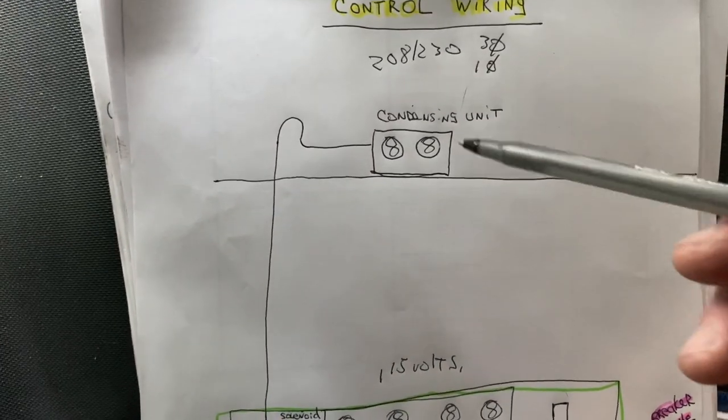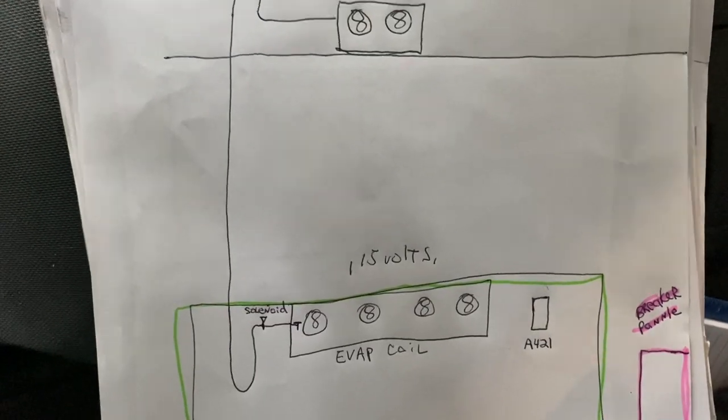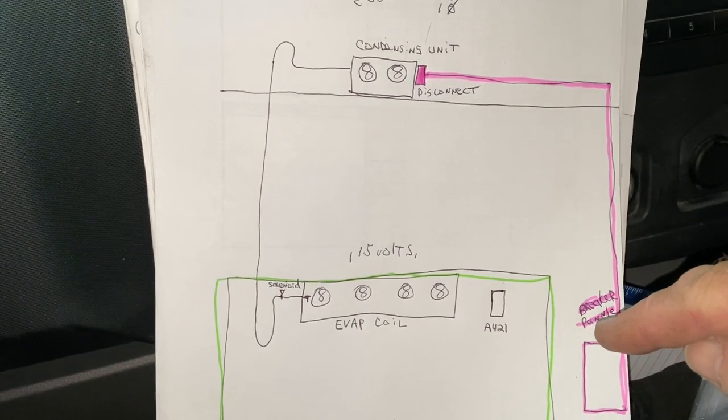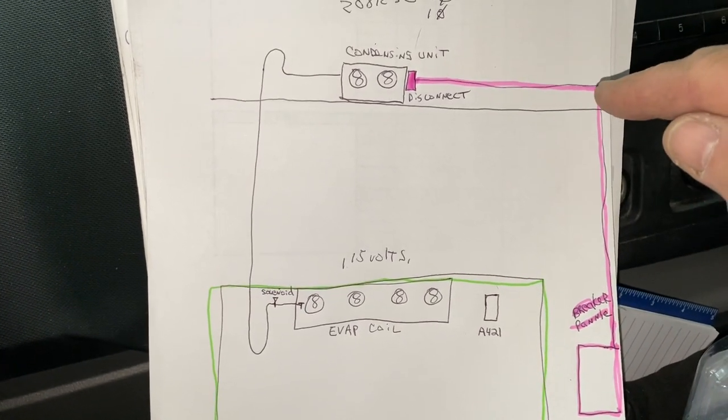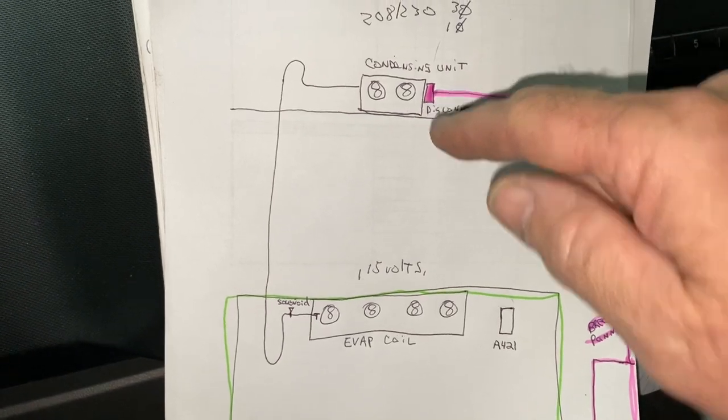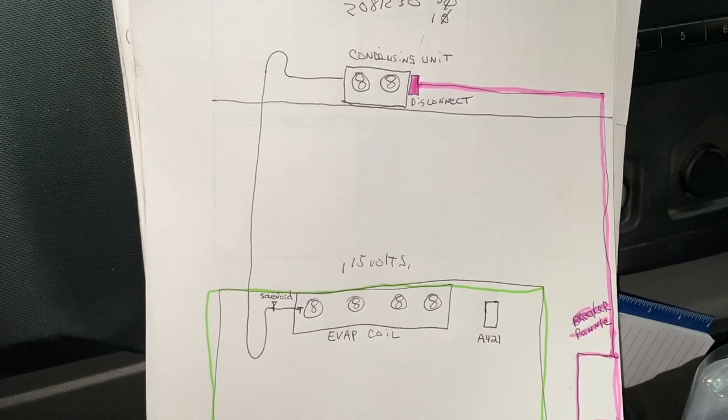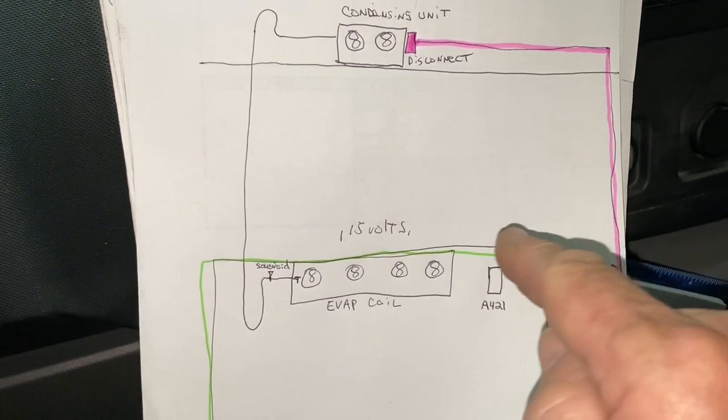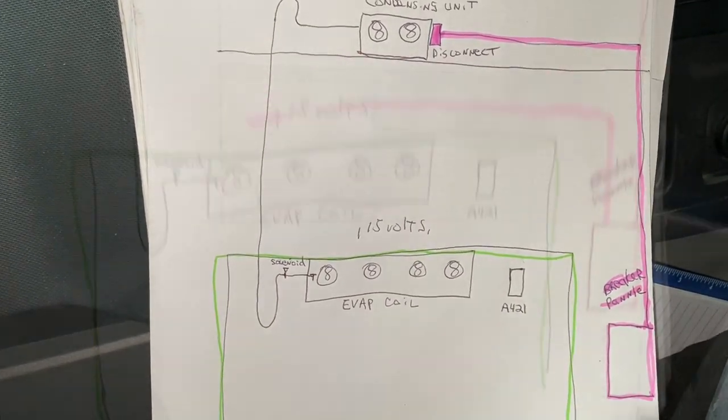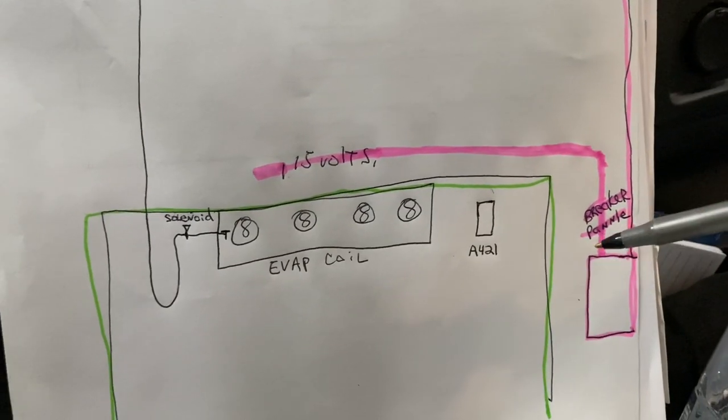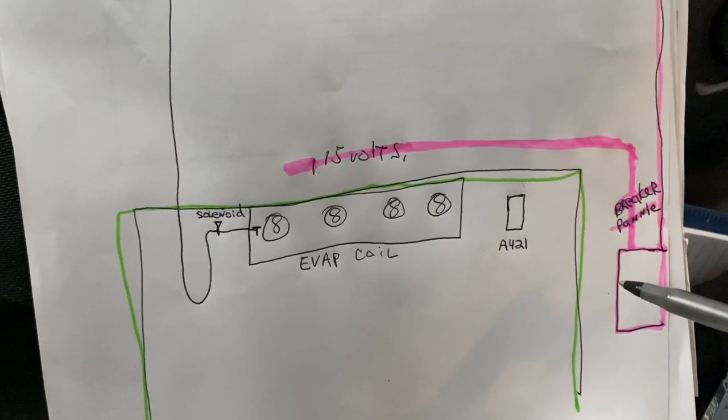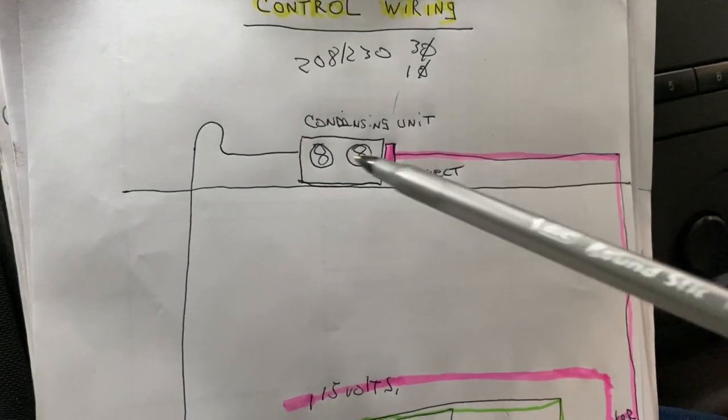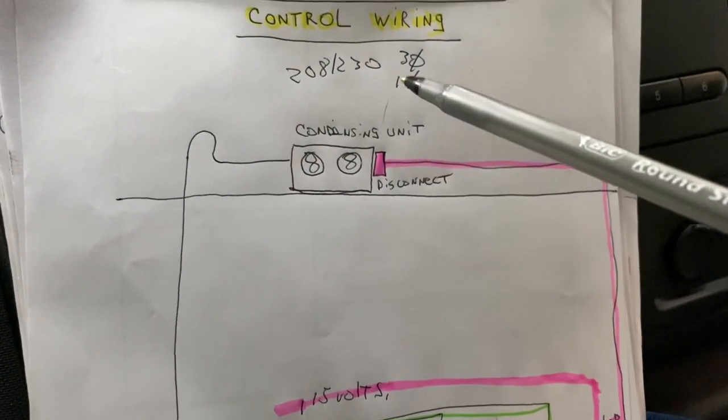That's going to be a separate circuit on the roof for your condensing unit. From your breaker panel in a conduit up to the roof to your disconnect. Separate circuit. Now we're going to have a 115 volt circuit that comes over here to our evaporator coil. This will usually be a single pole breaker. This will be a three pole breaker if it's three phase for the roof unit, or a two pole breaker if it's single phase.